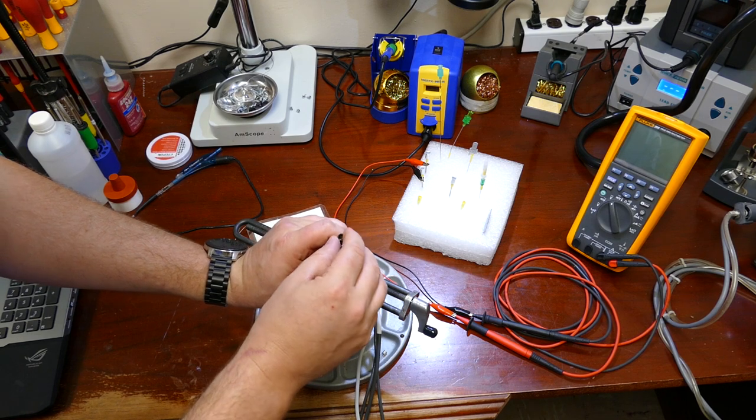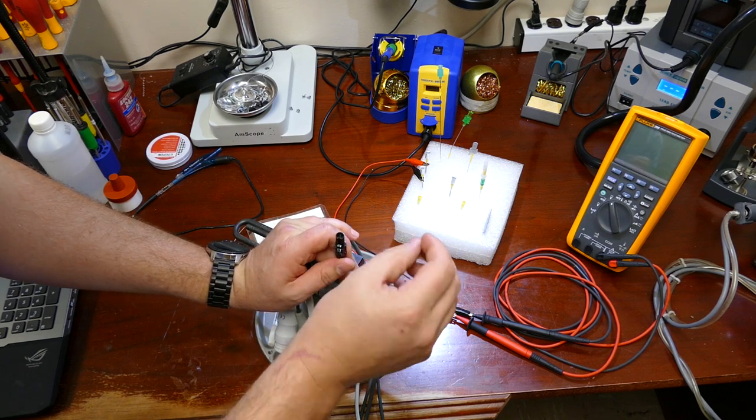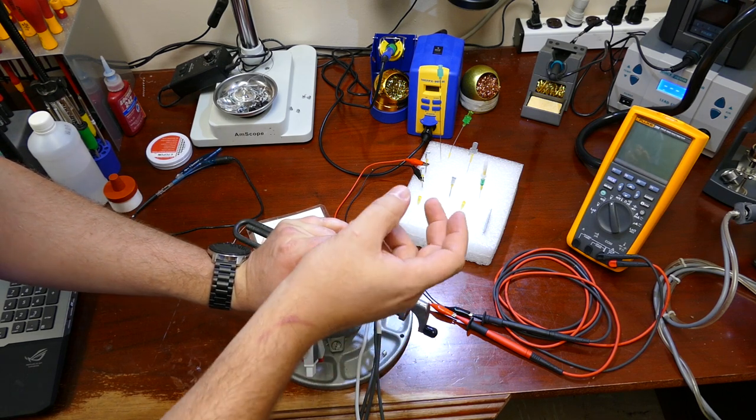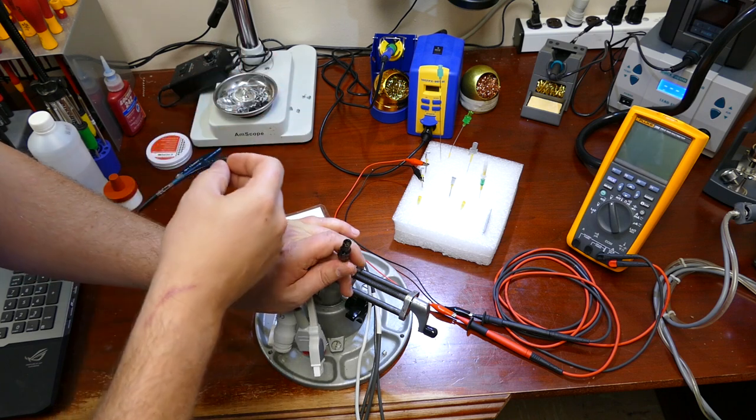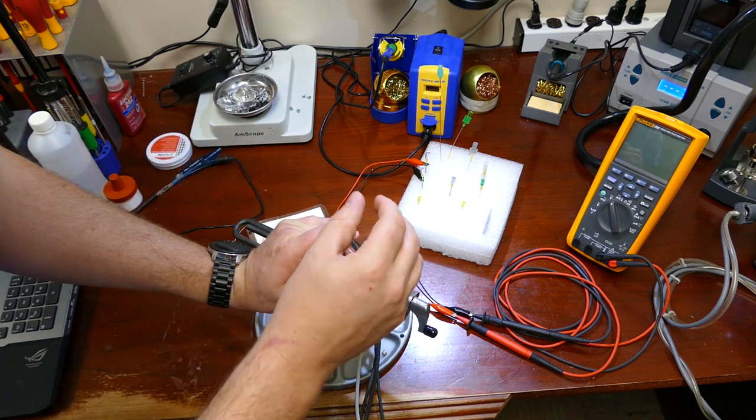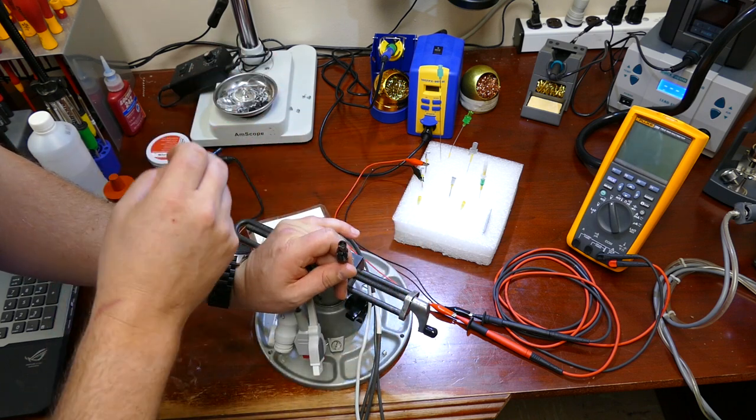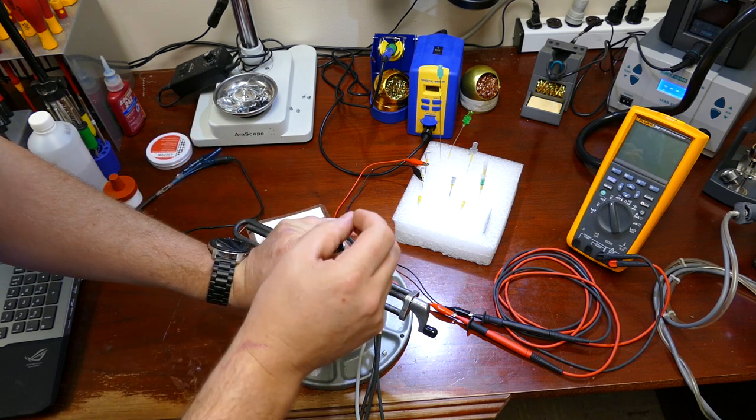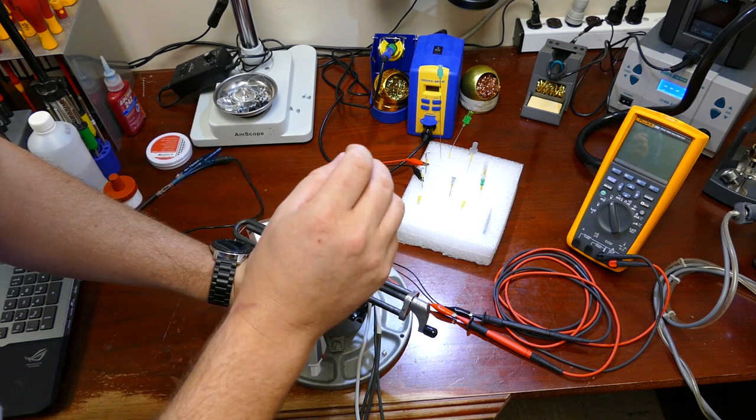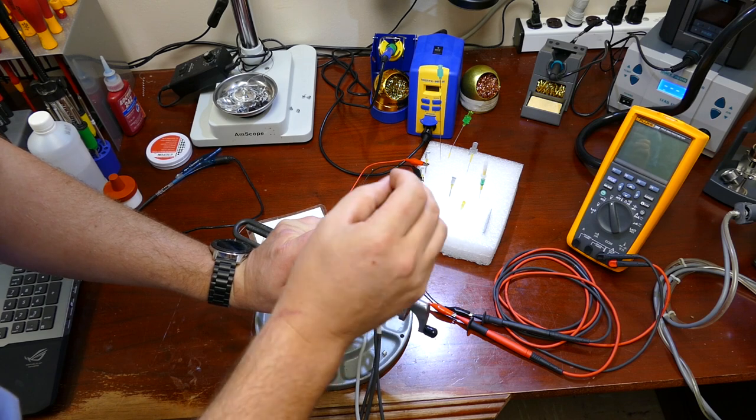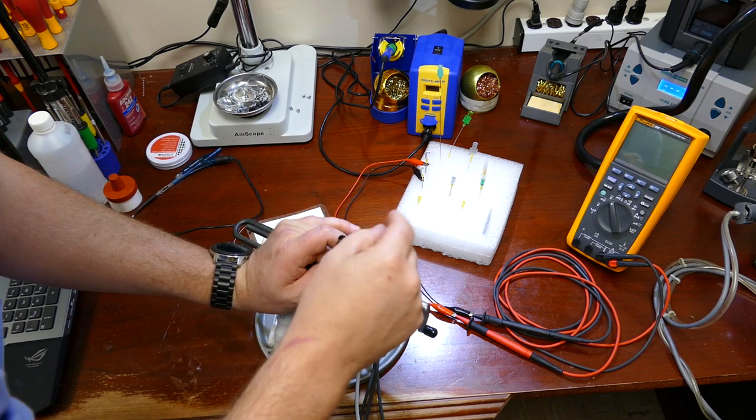If you have bent over pins, some people will use a flat blade screwdriver, some people will use a knife or something like that to try and get in there and straighten out the pins, and they'll often break them off. The reason they break them off is because they have no tactile response to how much force they're applying to the pin.